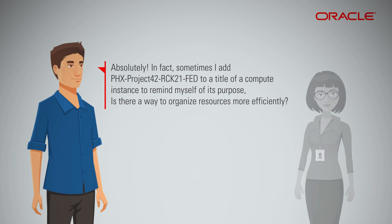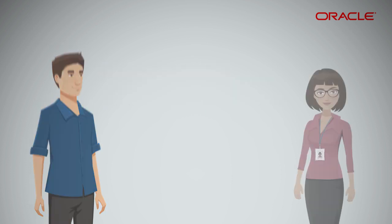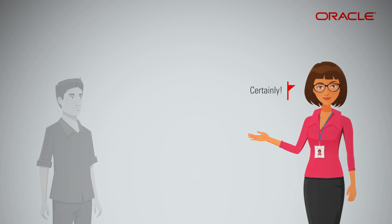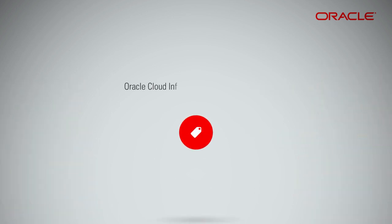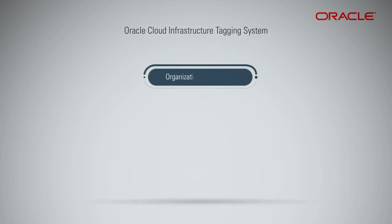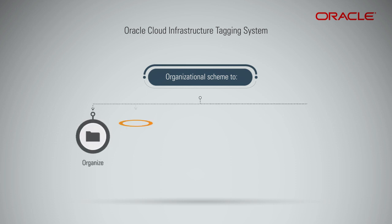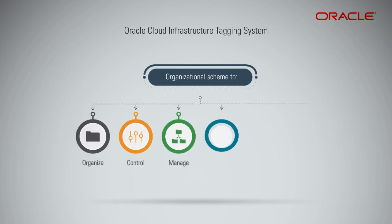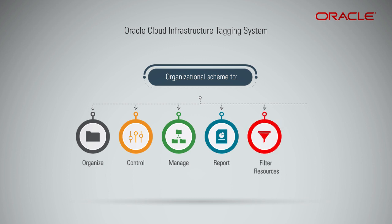Is there a way to organize resources more efficiently? Certainly. The Oracle Cloud Infrastructure Tagging System allows customers to tag resources in any organizational scheme they choose, which allows them to more richly organize, control, manage, and report on their cloud resources. The service enables users to filter, control access, and perform bulk actions on a set of resources based on the tag.